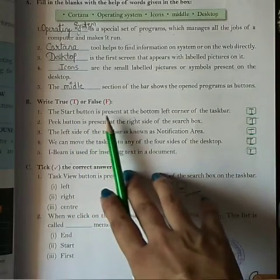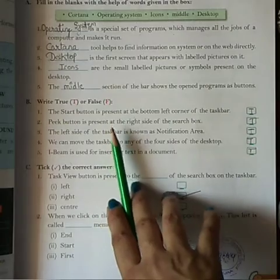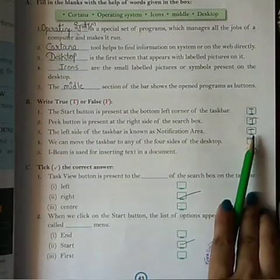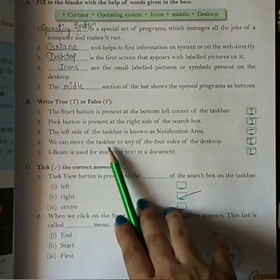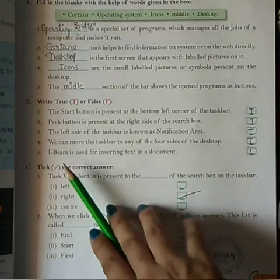True and false: the start button is present at the bottom left corner of the taskbar, true. Peak button is present at the right side of the search box, true. The left side of the taskbar is known as notification area, true. We can move the taskbar to any of the four sides of the desktop, true.